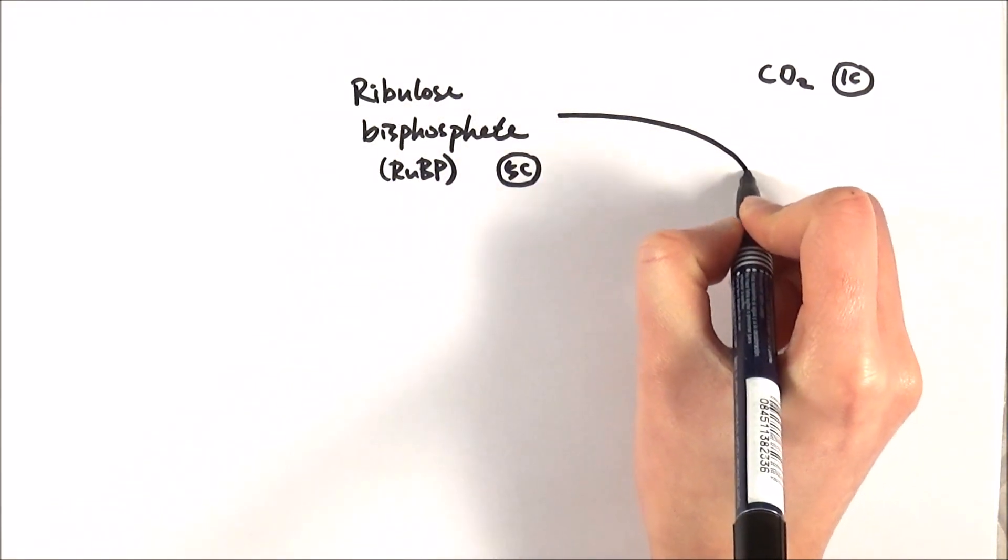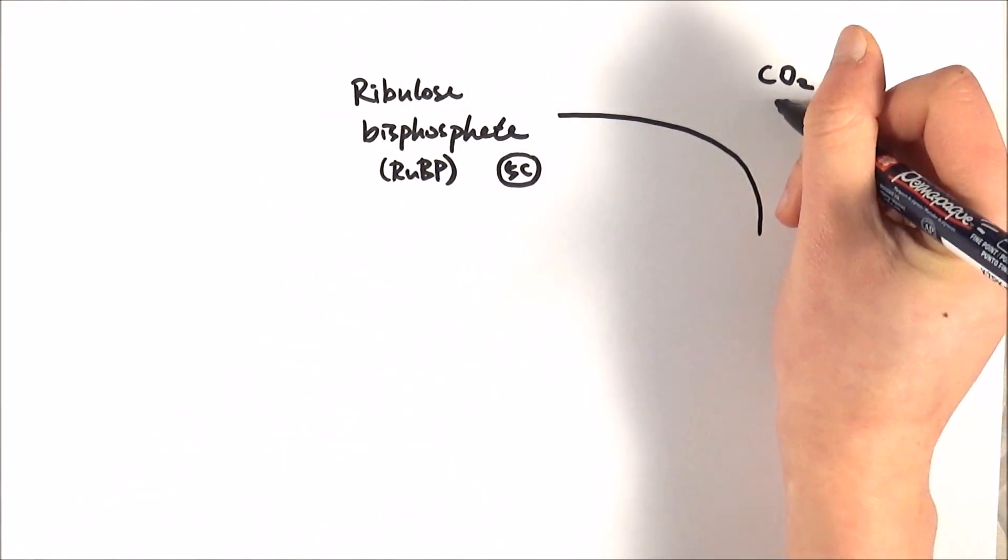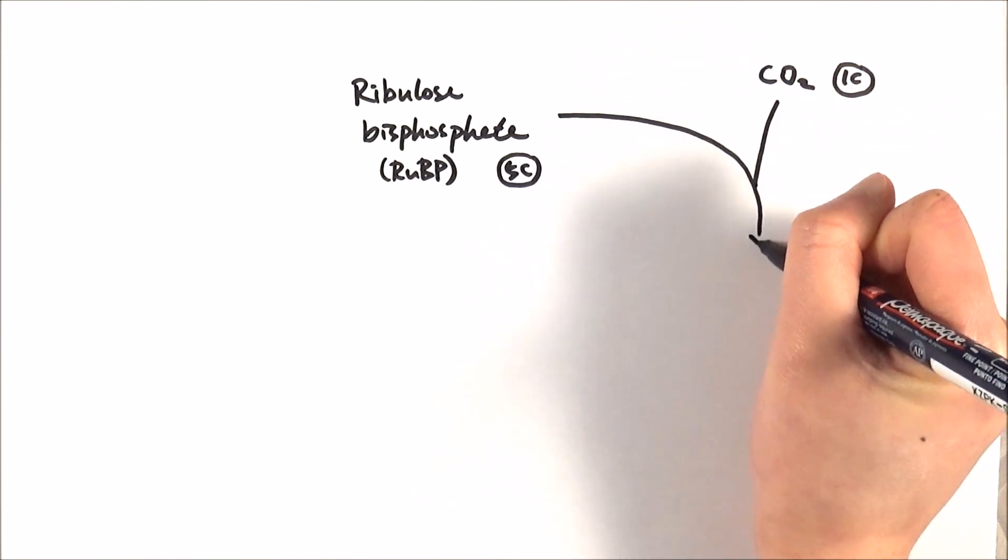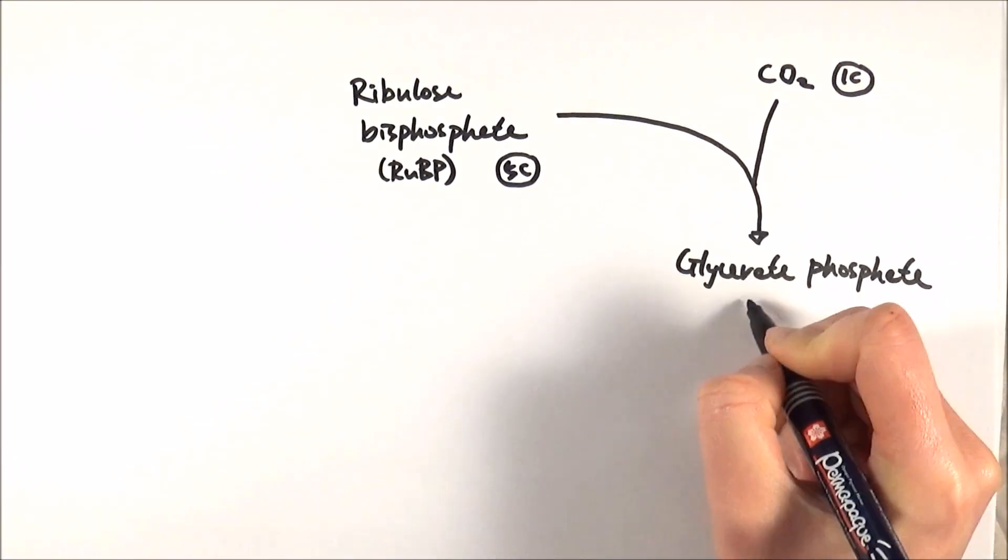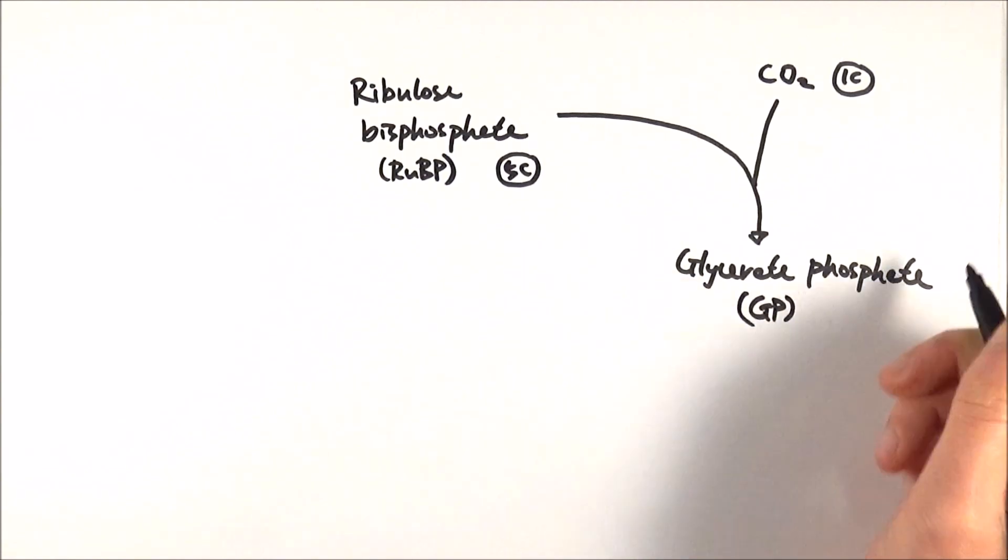So when they combine together, they make a six-carbon molecule called glycerate-3-phosphate. We can also call it GP, just to make it short.